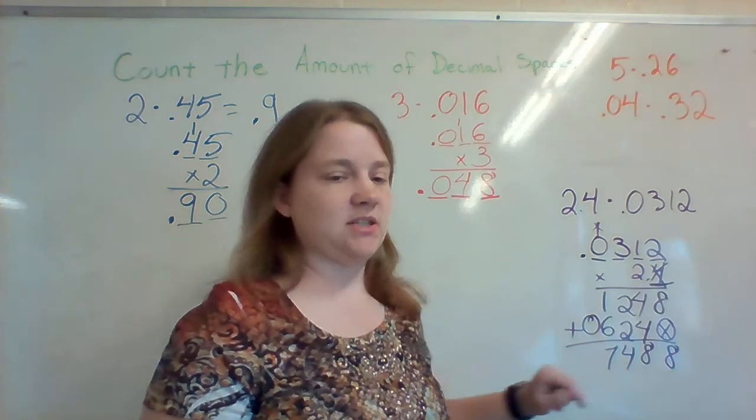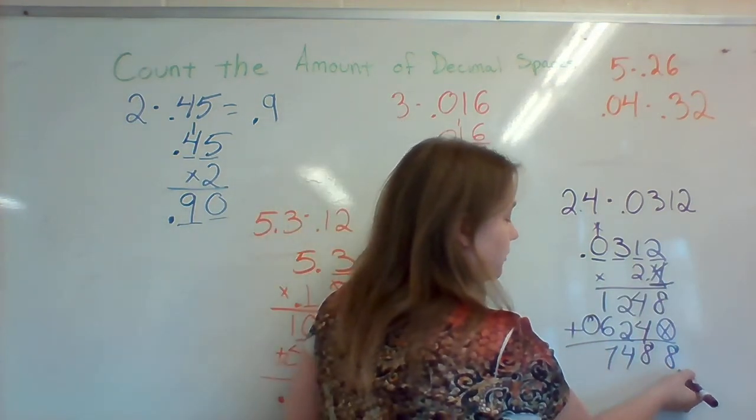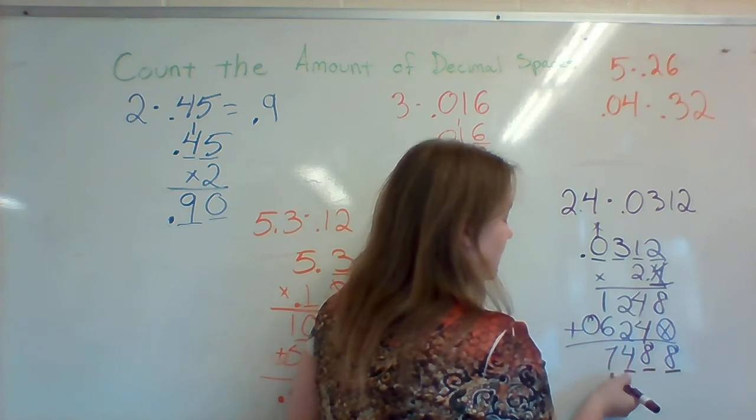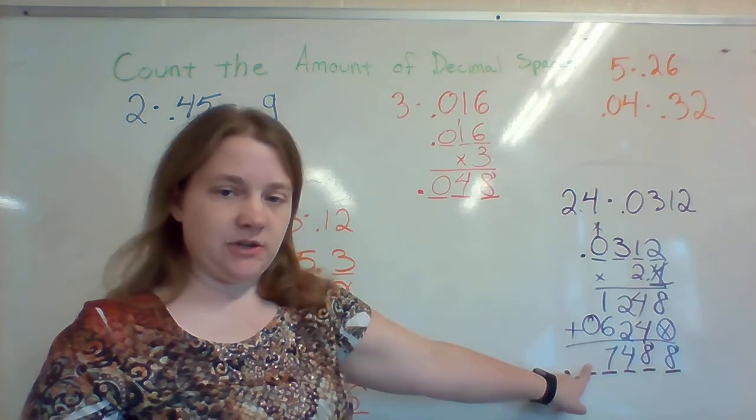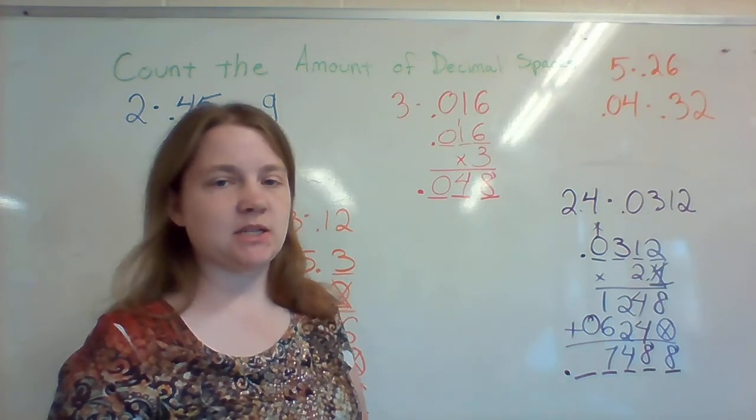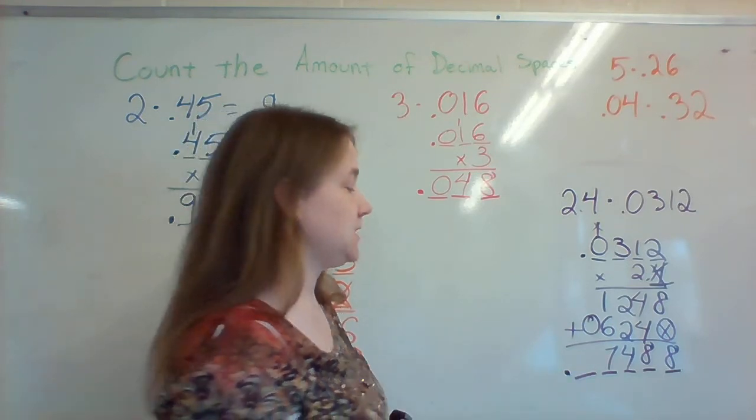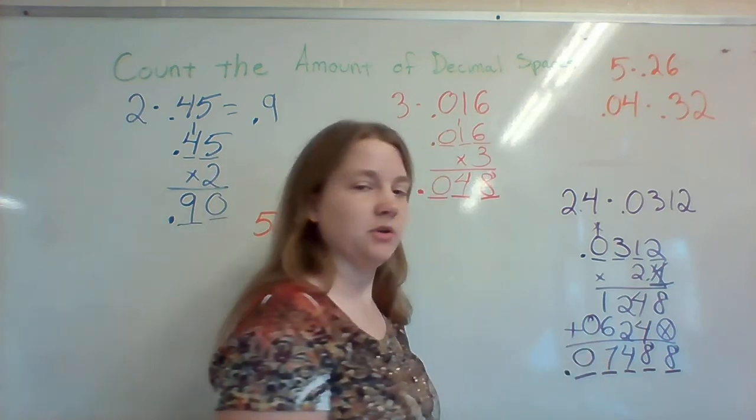Which means that down below, I'm going to start at the end and I'm going to go over 1, 2, 3, 4, 5 spaces and put the decimal. I have an empty space here. We've worked with these empty spaces in the past. We know that any empty space, you put a 0.